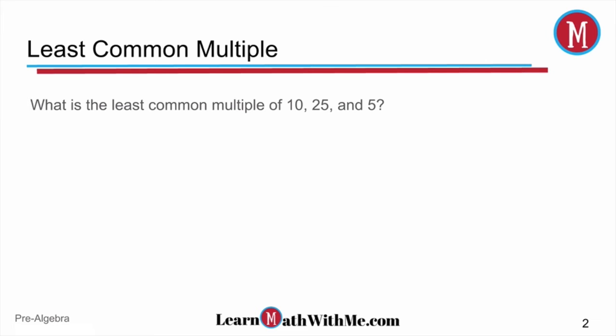So to find the least common multiple, we're going to take each one of these numbers and write out a few multiples until we find one that is the common one, and we're looking for the least common one. So let's start off with 25. If we write a few multiples of 25, we get 25, 50, and maybe we can stop right there because I'm already seeing that with 10 and 5, there's a good possibility that 50 could be our answer.